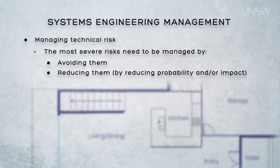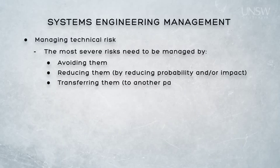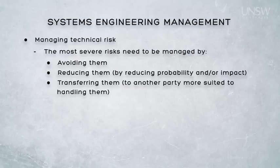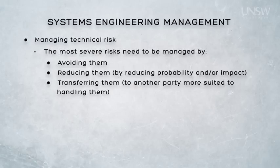Other examples of risk management within our house design might be to build spare capacity into the house for future growth. For example, we might reduce the risk of overloading our electrical system by ensuring that each circuit is only carrying 50% of its design capacity. This reduces the risk of overloading our circuits and provides a platform for future growth. Another design approach that we may take is to build redundancy into our designs, especially for safety or mission critical elements of the design.